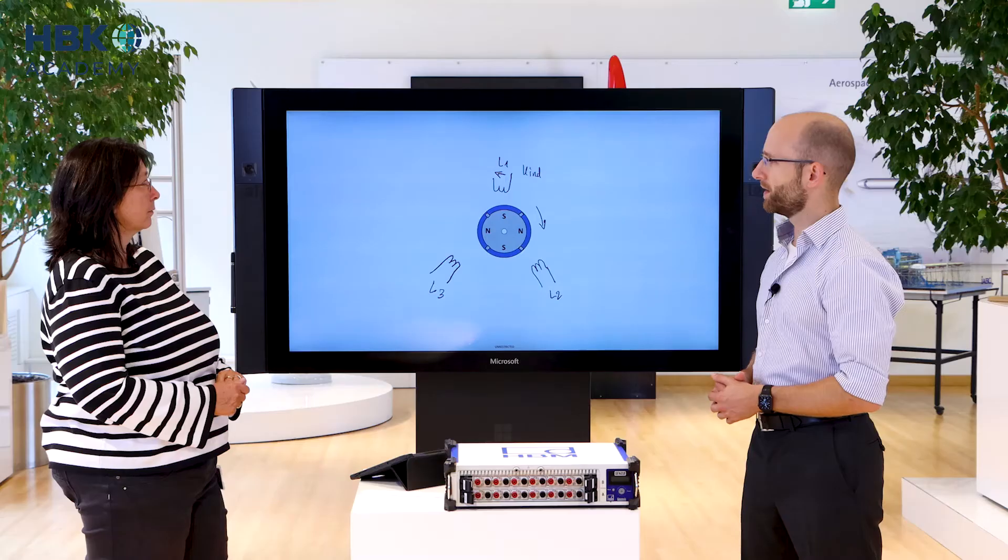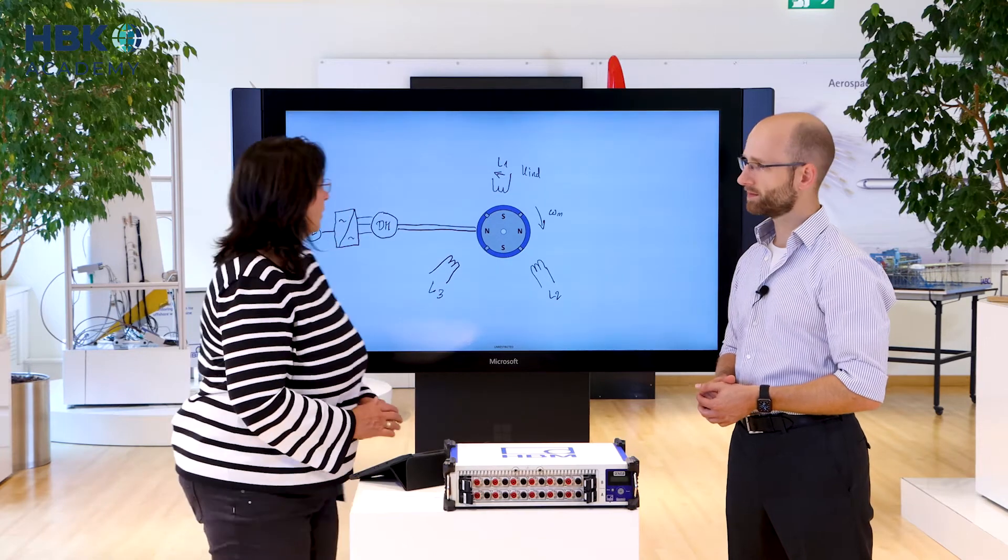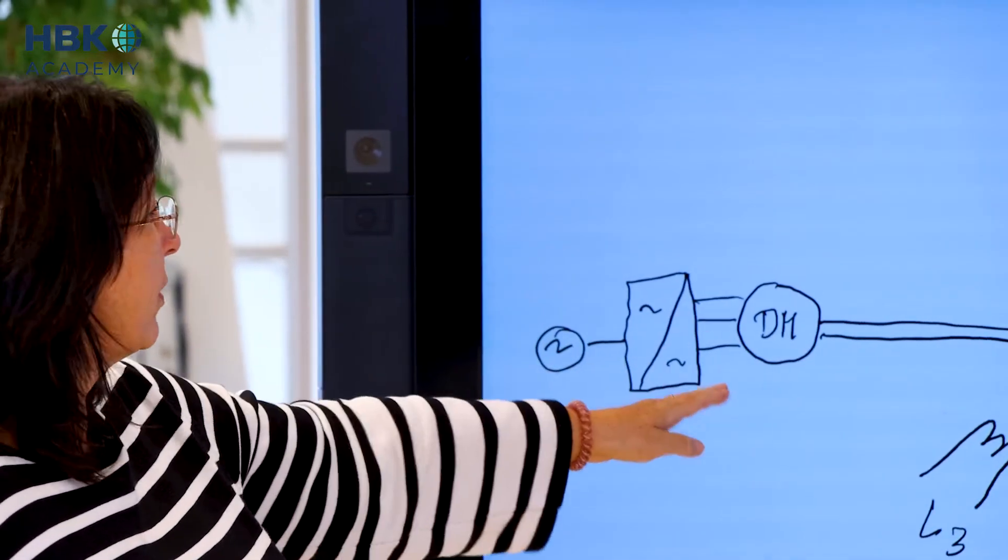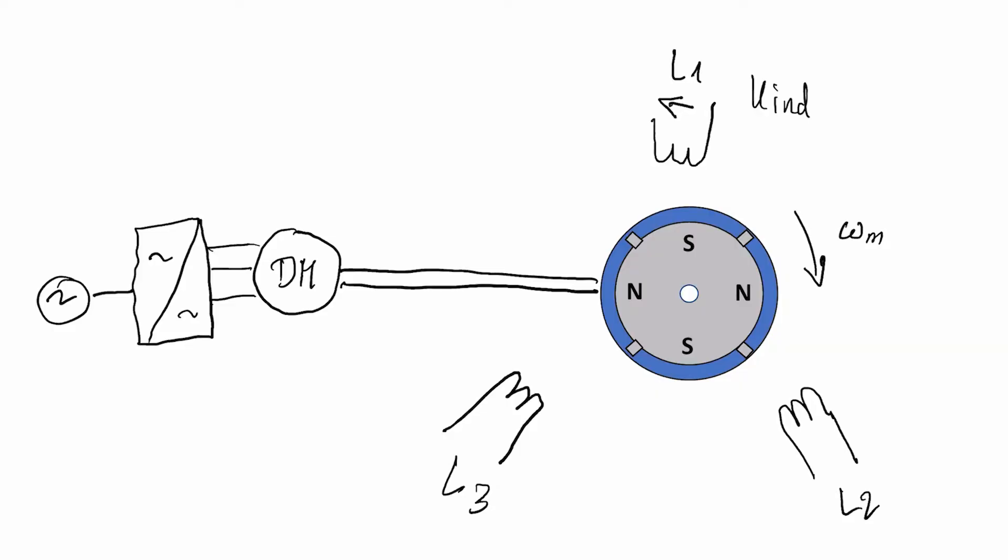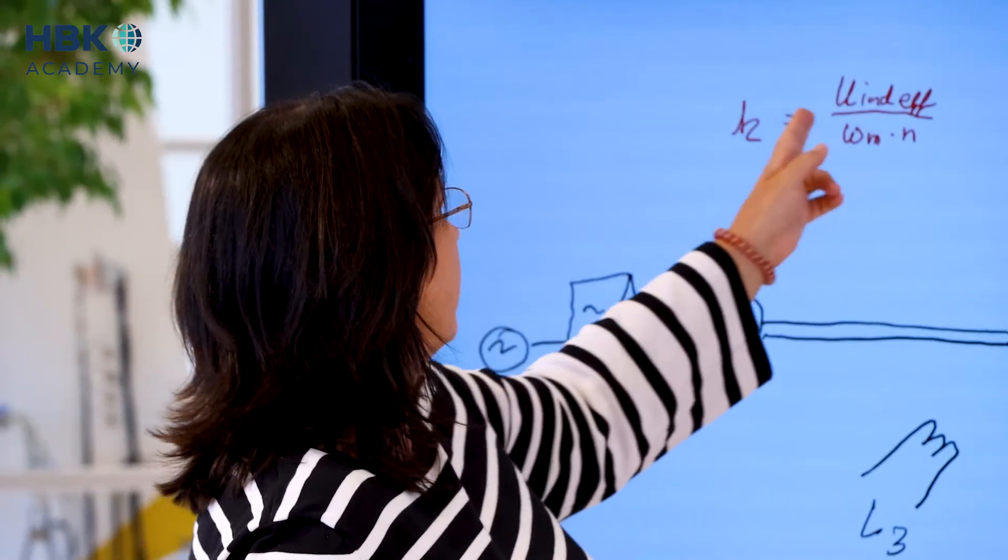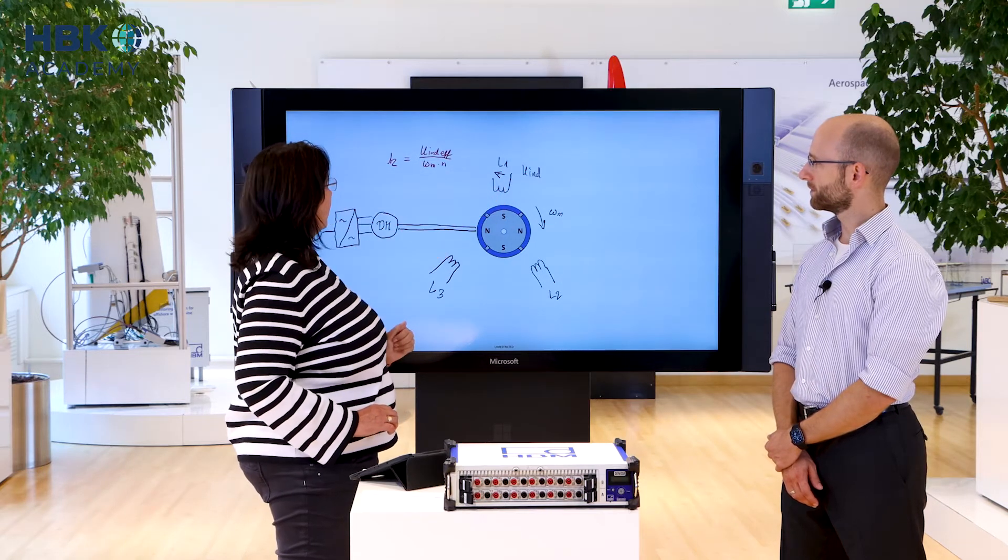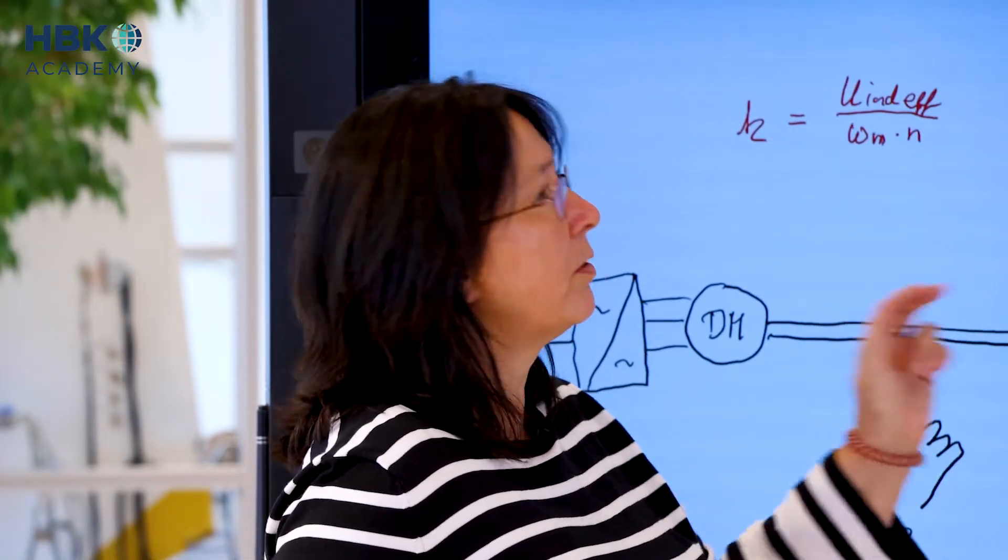And how is the back EMF test normally done? In the classical way this back EMF test is done with a second motor that drives this rotor at a constant rotational speed. And for the control of the second motor we need also an inverter and an additional power source. The goal is to calculate a constant and this constant is the RMS voltage that we can then measure within each phase divided by the number of pole pairs and the rotational speed.